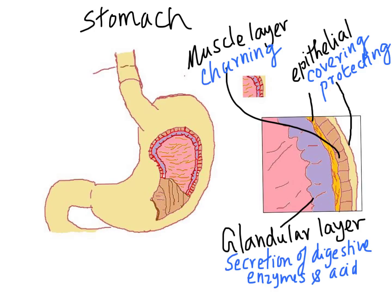To summarize the layers: the outer epithelial layer contains epithelial cells — epithelial tissue — whose main function is covering and protecting the inner layers. The muscle tissue can contract and relax, making churning possible. Inside, the glandular tissue is responsible for secretion, producing digestive juices. As you can see, different types of tissues each specializing in their own function are combined together, and that is what makes the organ. Different types of tissues make the stomach, which is a very good example of an organ.